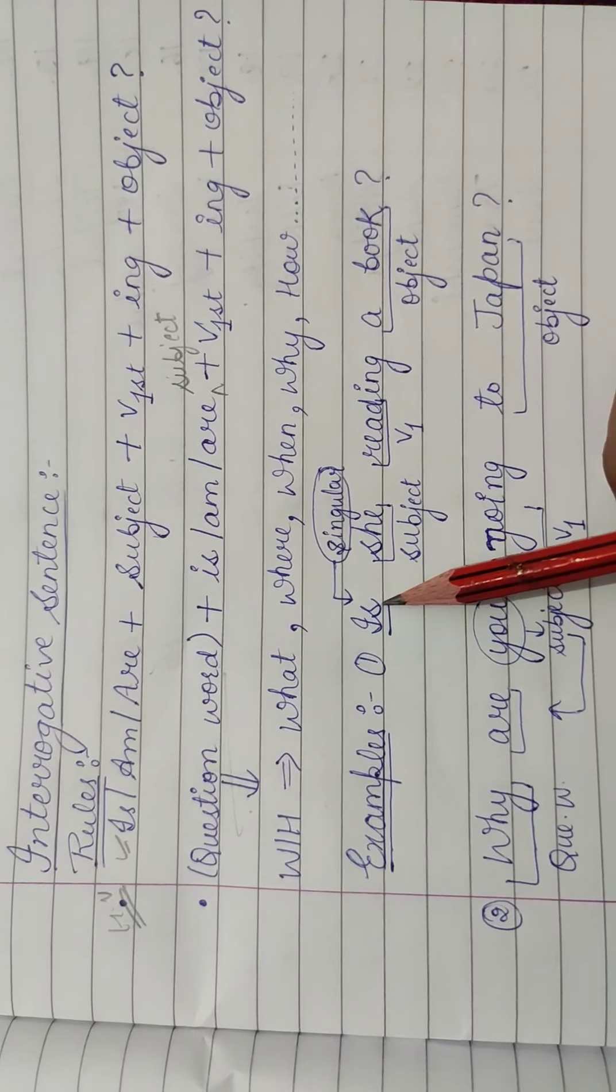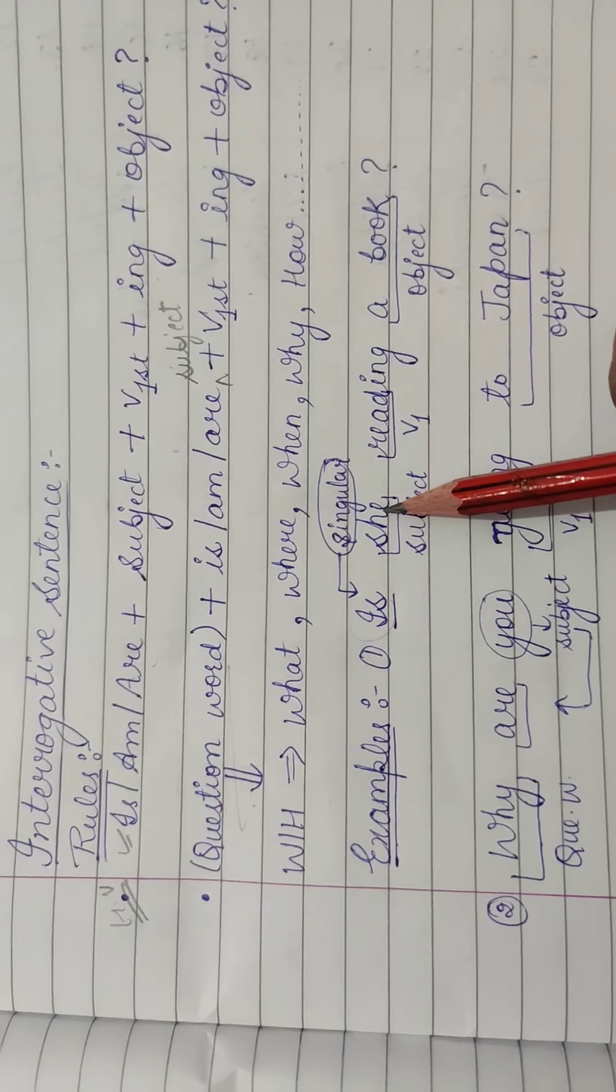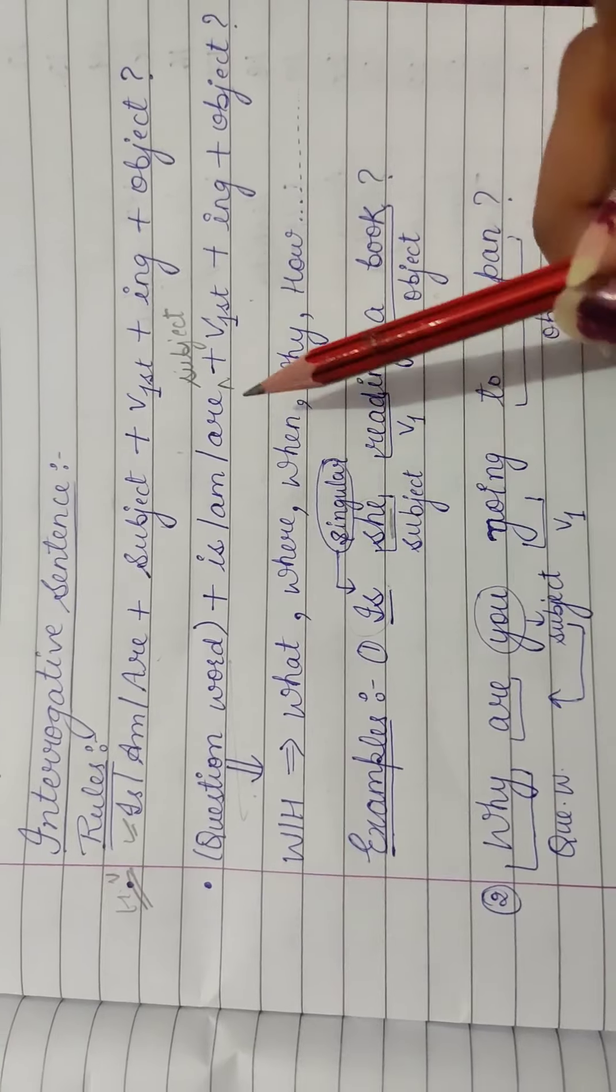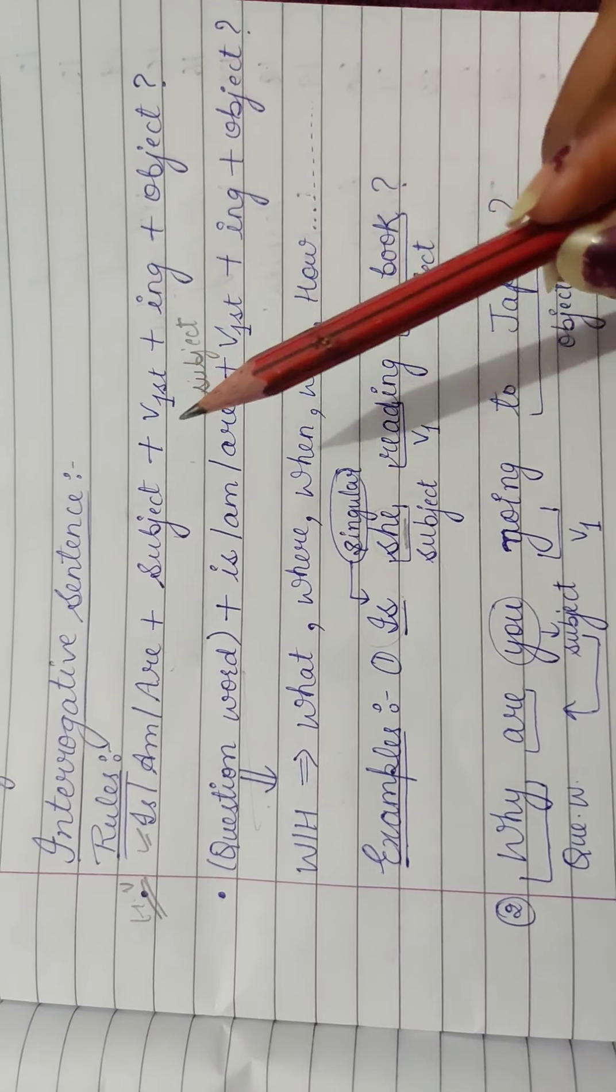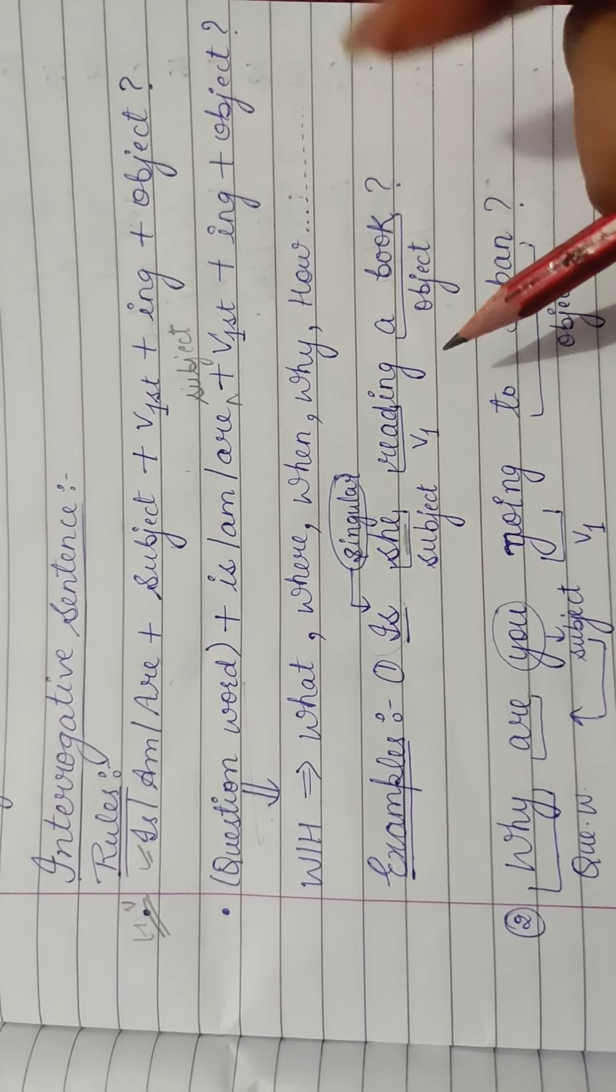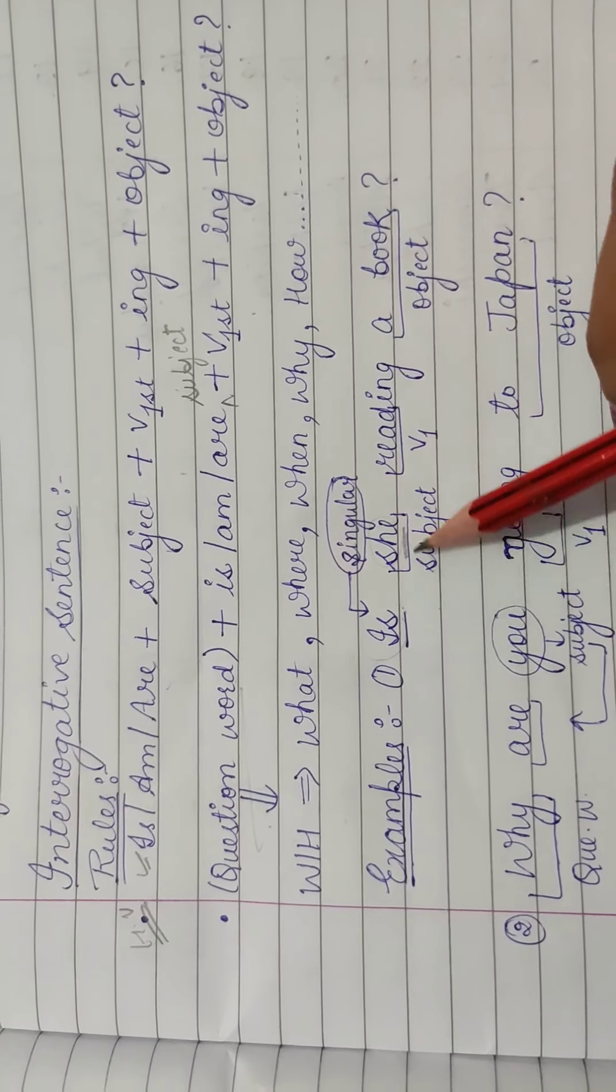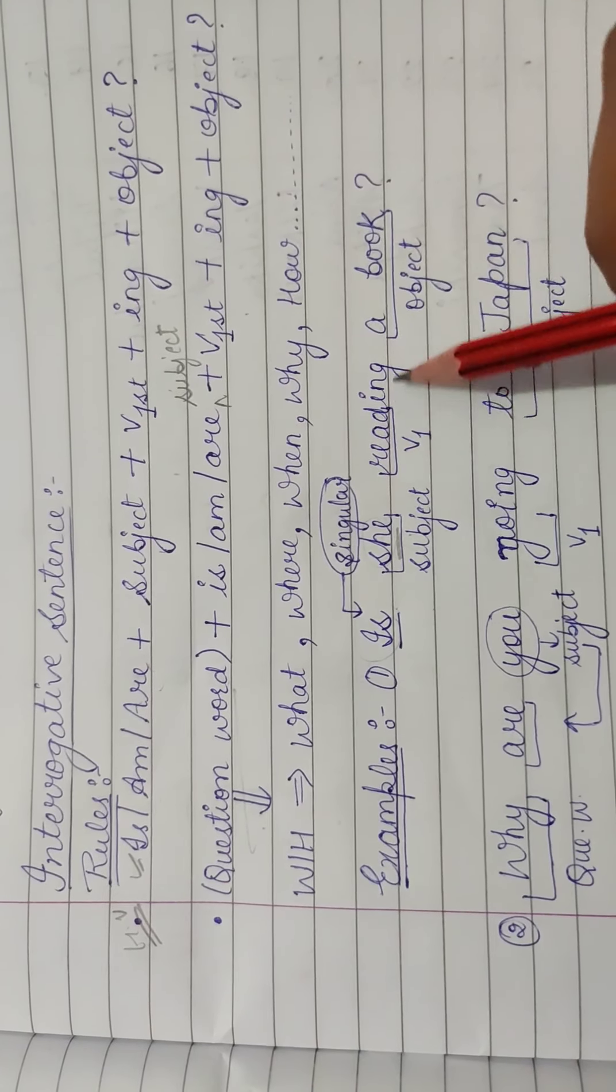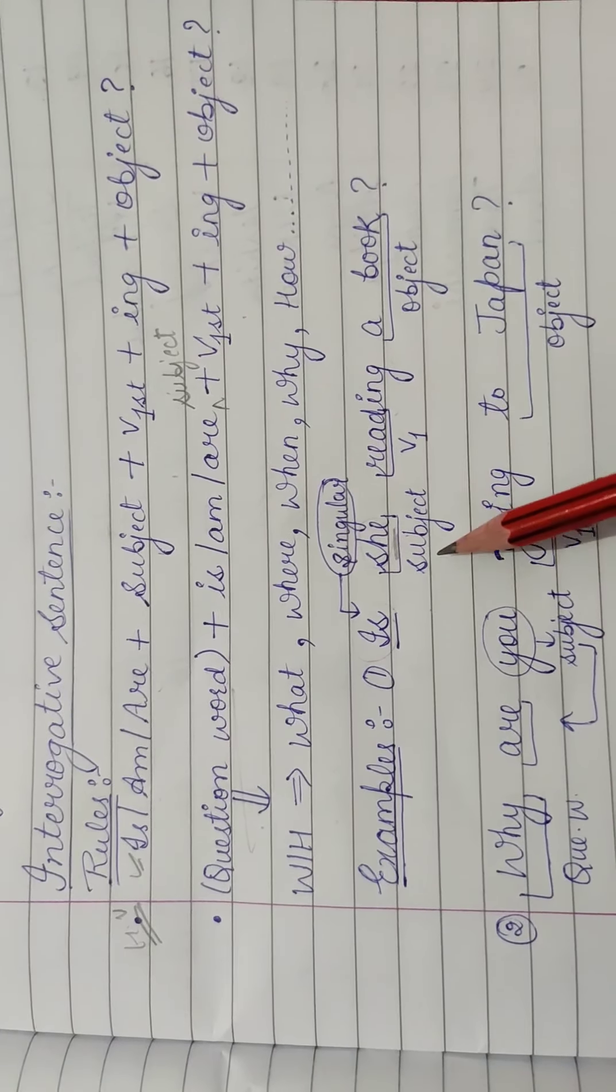Sab se pehla, maine bataya hai, helping verb aayegi. To is aagay, helping verb. Is kyun aaya? Ki she hai humara subject. To she subject is, so is aagya. To question, hum may sentence vahhi same le raha ho, ki she is reading a book, wala sentence le raha ho. Bas pahle she is tha, ab is she aajayega. Is she reading a book? Kya woh book padh rahi hai? Kya woh hai book padh rahi hai?